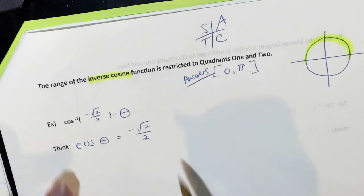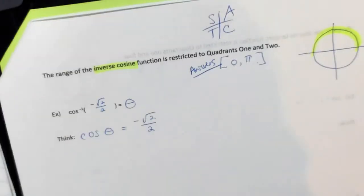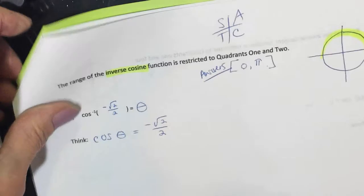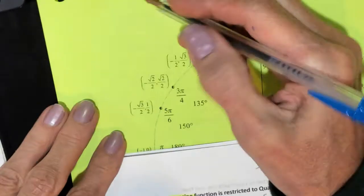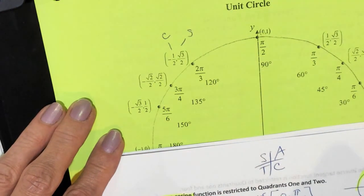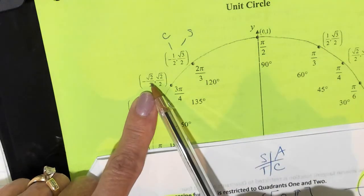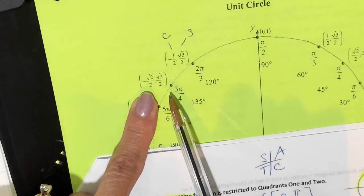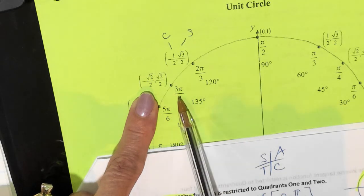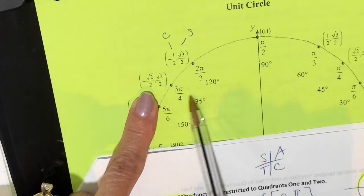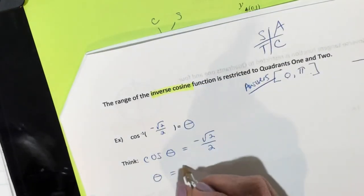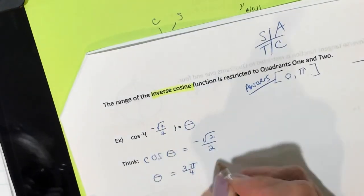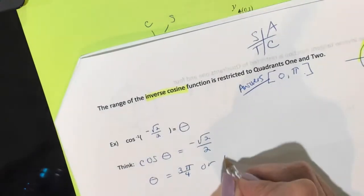Get out your unit circle and go to quadrant 2. Remember, it's cosine then sine. We're looking for negative root 2 over 2, and here it is. So we've got 3pi over 4, or if we're in degrees, 135 degrees.